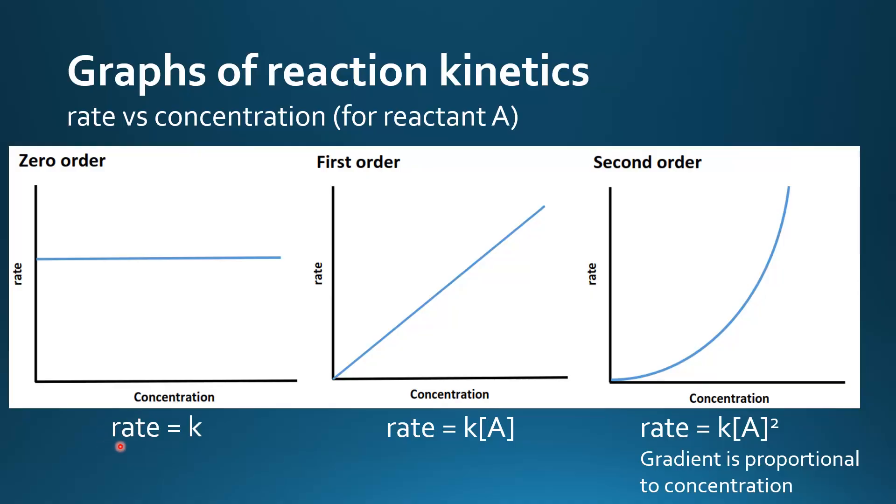And here we have the rate expression, so it's rate equals K. Because the order of reaction is 0 with respect to reactant A, we don't include it in the rate expression.